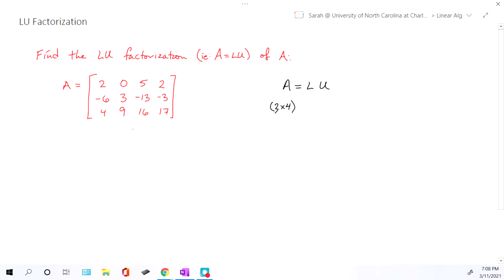So for this matrix that we're given, you've got three rows, four columns. It's a 3 by 4 matrix. U is an echelon form of matrix A, so it's always going to be the exact same size as A. So U is also going to be 3 by 4.